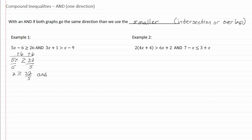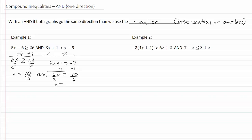Bring down our 'and' and let's get our x's on one side. So I've got two x plus one is greater than negative nine. Let's subtract one from both sides. We get two x is greater than negative ten. Divide by two and we get x is greater than negative five.